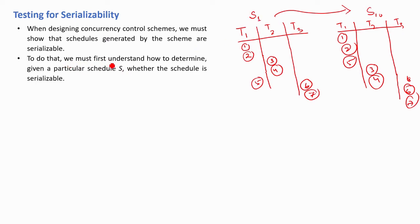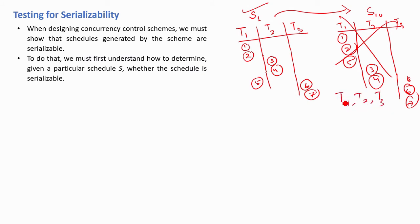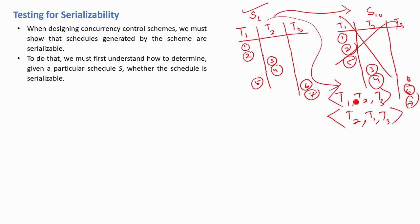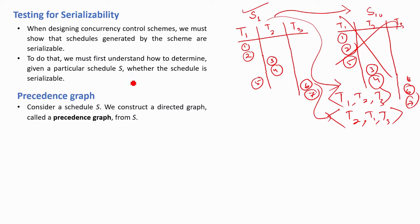To check whether a schedule is serializable or not, we must first determine given a particular schedule s whether it is serializable. It is not straightforward because there are many possible serial schedules — for example, t1 t2 t3, or t2 t1 t3 — and checking each one may take a long time. So we have a better algorithm for this: we can use a precedence graph.